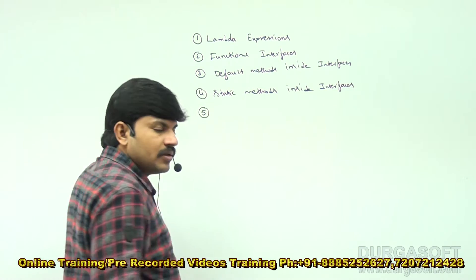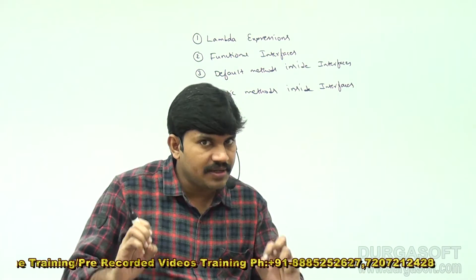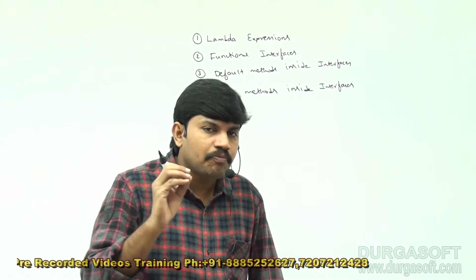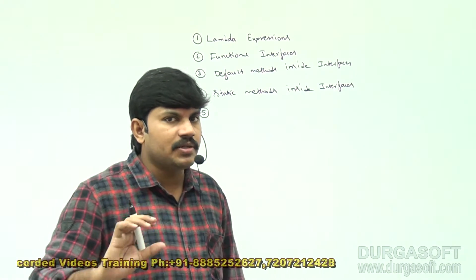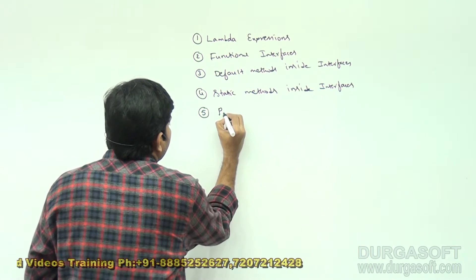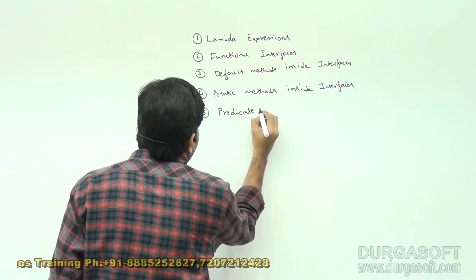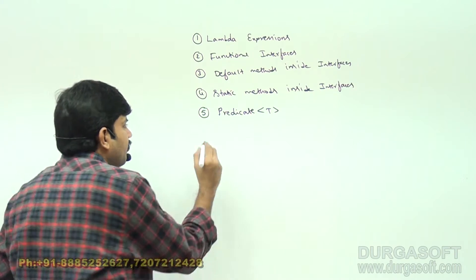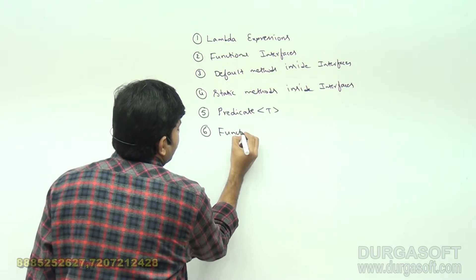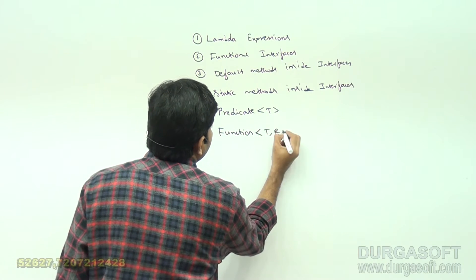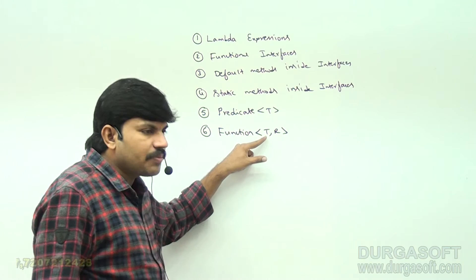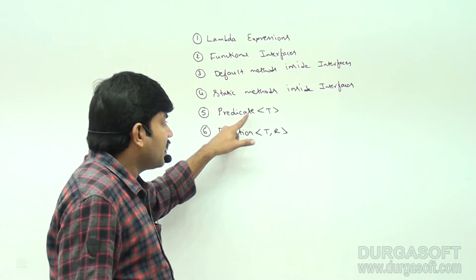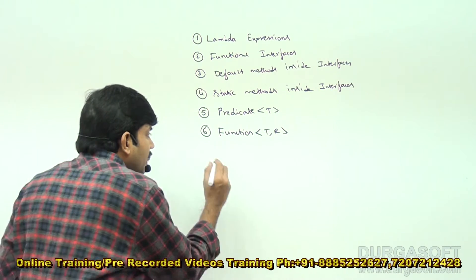After that, we covered several predefined functional interfaces present inside the java.util.function package — inbuilt Java API functional interfaces. The first one we discussed was Predicate, which is a boolean-valued function used for conditional checks. Next, we discussed Function, which can take some input, perform a required operation, and return a result — the result need not be a boolean type, unlike Predicate.